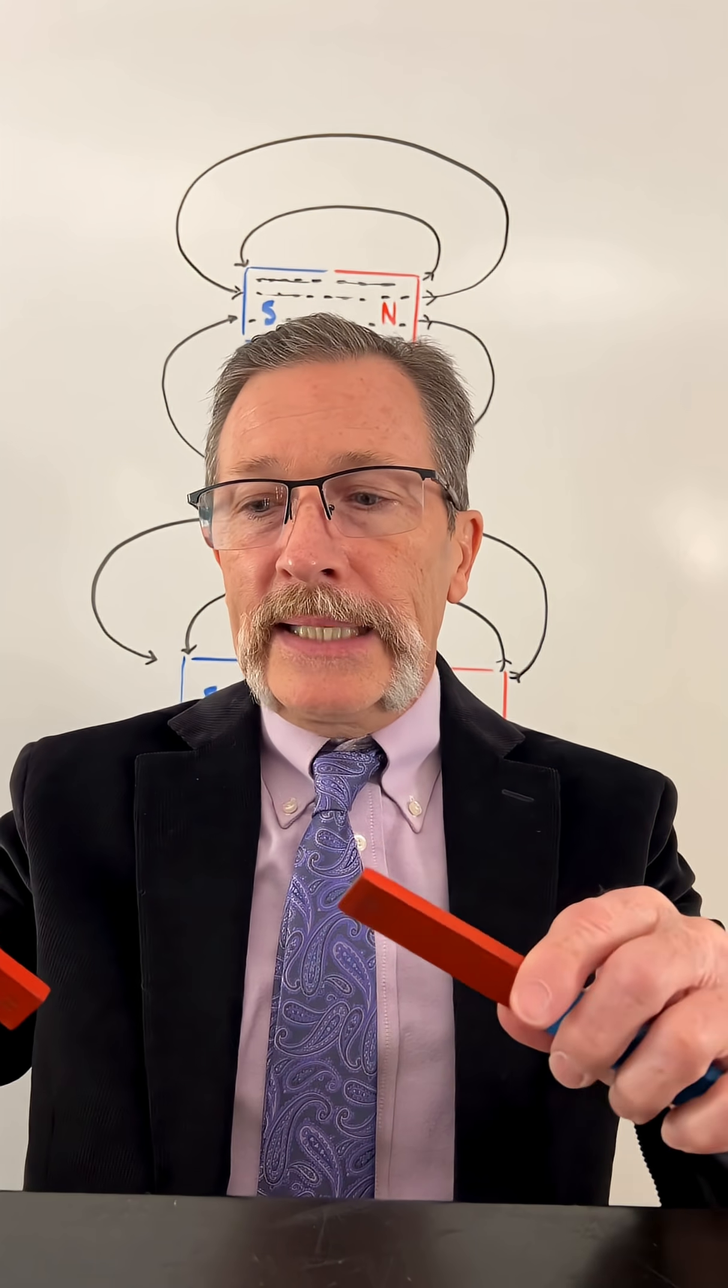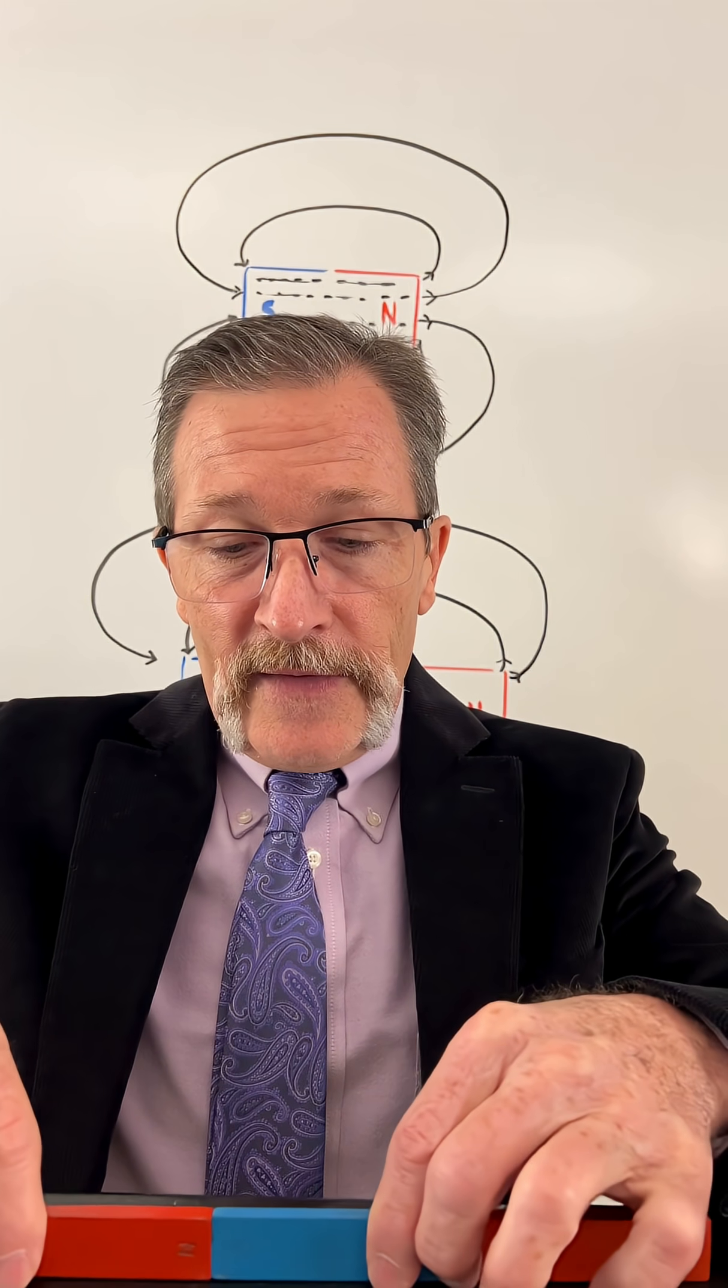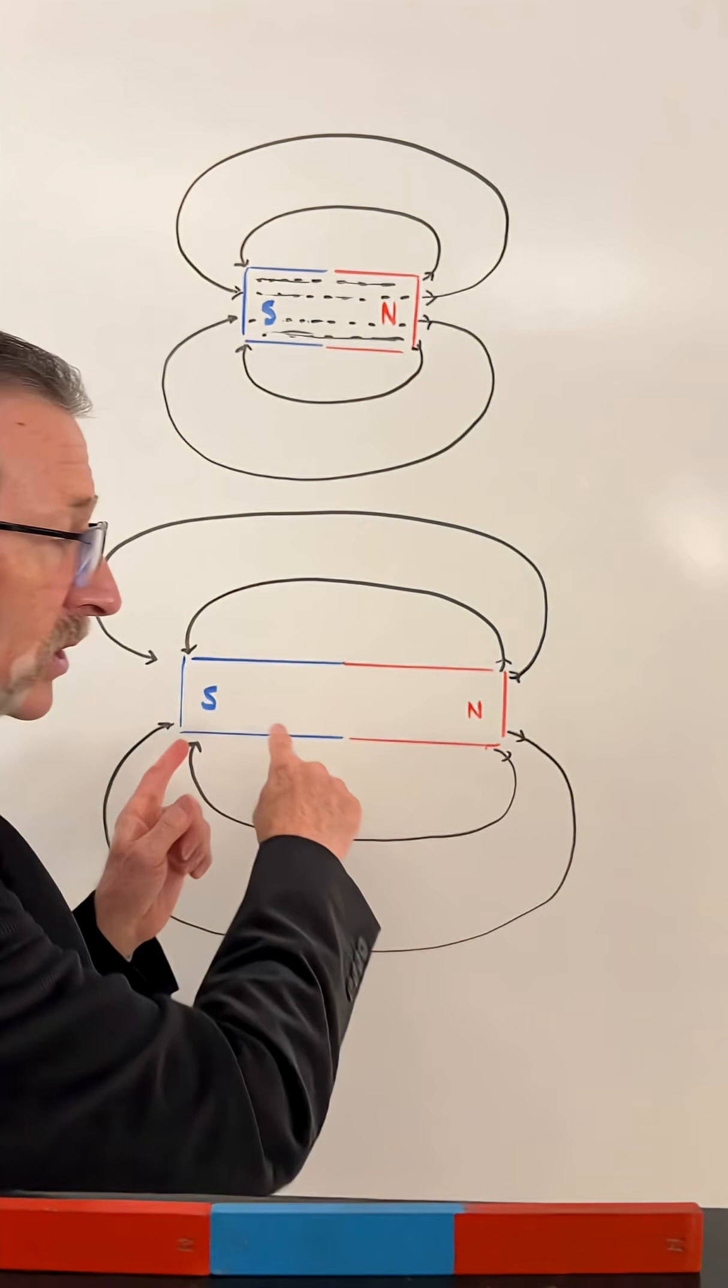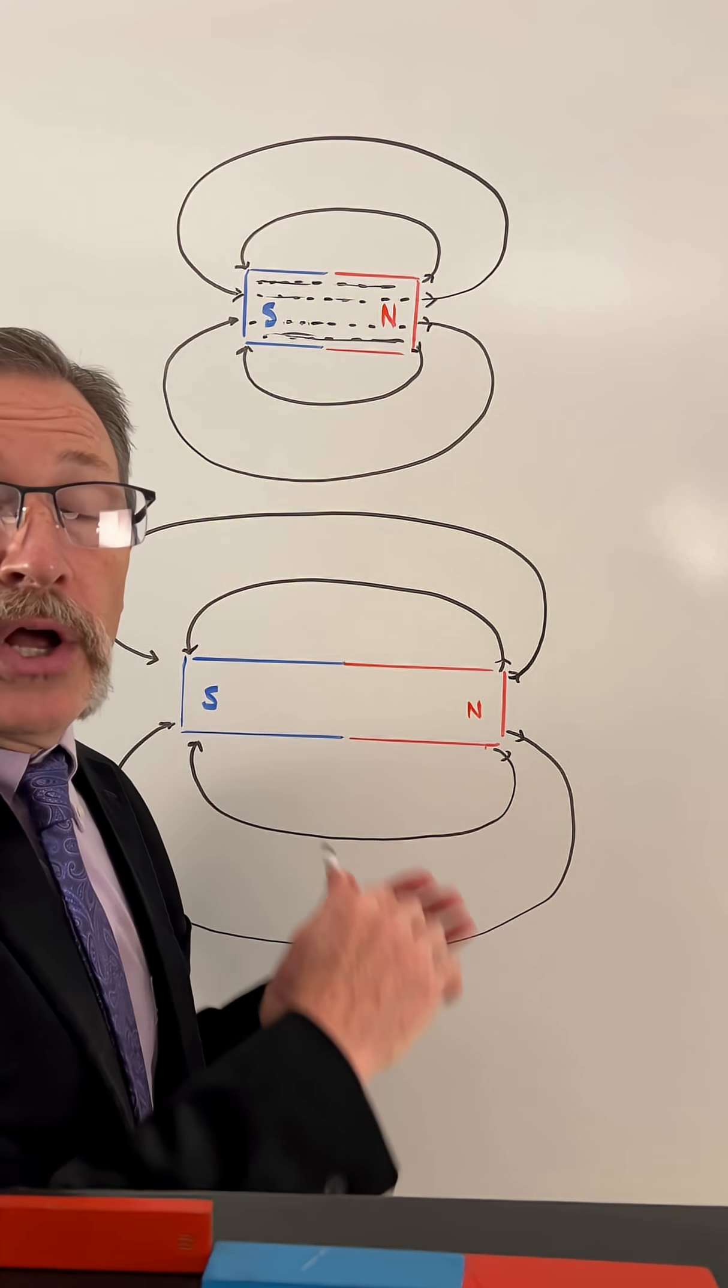So when I put the two magnets together, let's see how I have it north and south here, like so. And I push them together. Essentially, I'm making one long magnet and all the domains are lined up.